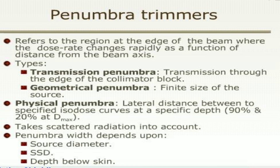Penumbra trimmer refers to the region at the edge of the beam where the dose rate changes rapidly as a function of distance from the beam axis. Types include: transmission penumbra — transmission through the edges of the collimator blocks; geometric penumbra — due to the finite size of the radiation source; and physical penumbra — the lateral distance between two specified isodose curves at a specific depth, typically 90% and 20% of Dmax. Penumbra depends upon source diameter, SSD, and depth below scale.